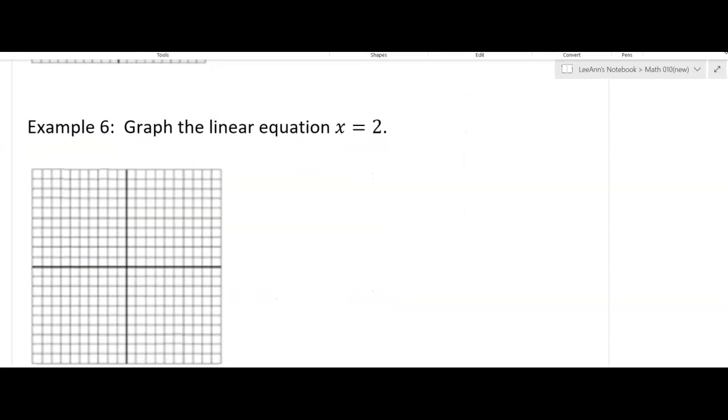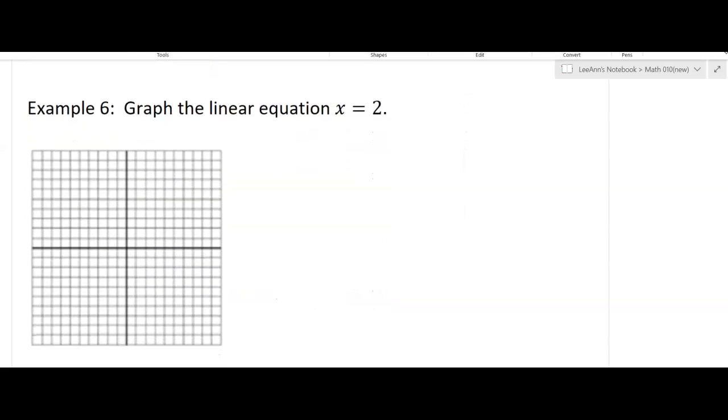All right, now we're gonna graph this linear equation x equals 2. Well in other words we're graphing every place where the points are x equals 2. So you're talking about having an x of 2 here, an x of 2 here, it's like 2,1, 2,2, 2,3, all of those points and it's making a vertical line.